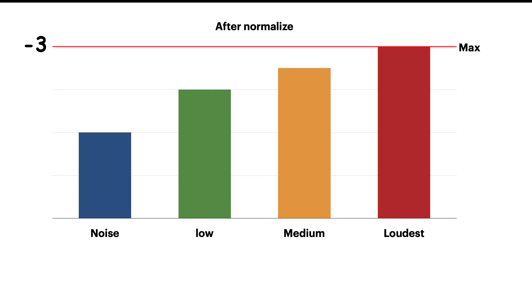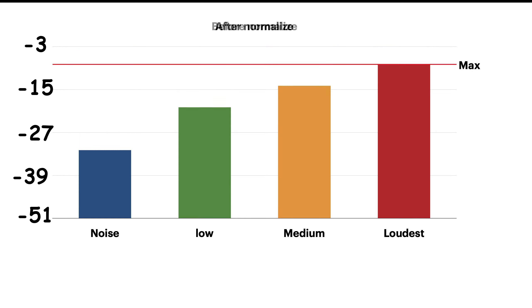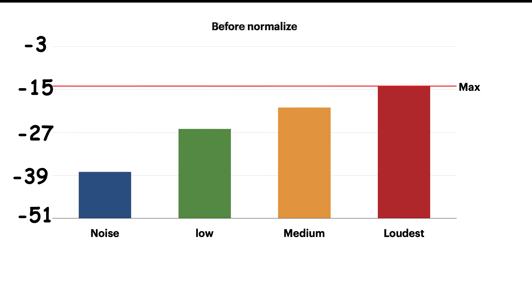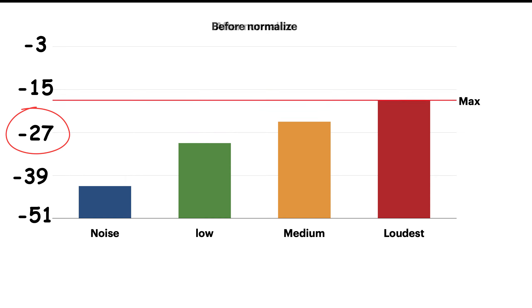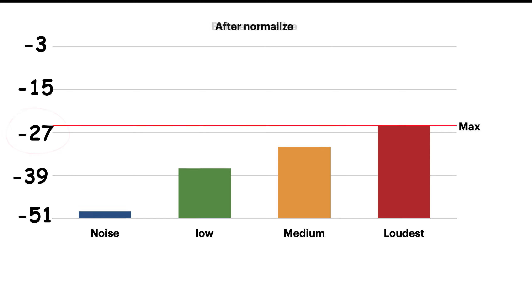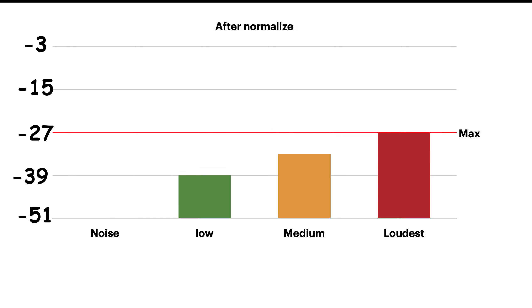If you set the normalization value to a lower volume, the overall volume will decrease. For example, if I set peak amplitude to minus 27, the overall volume will decrease. So normalization affects everything in the audio.